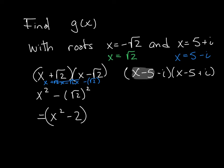This is x minus 5 for both of them. And then 1 is positive and 1 is negative. So that leaves me with x minus 5 quantity squared minus i squared.